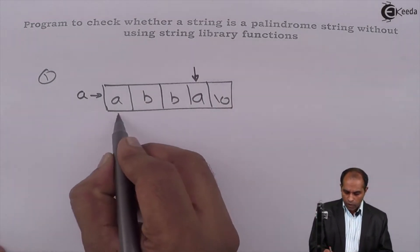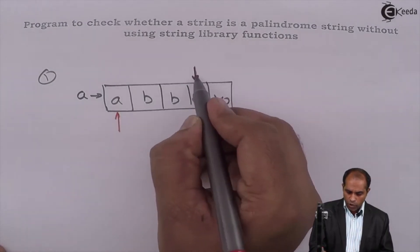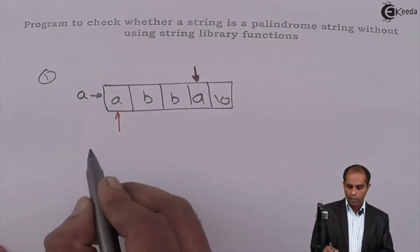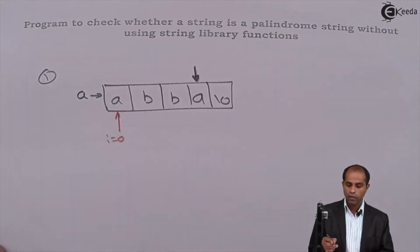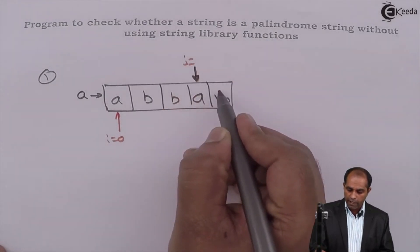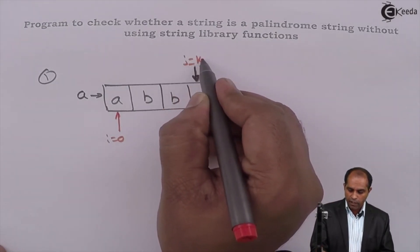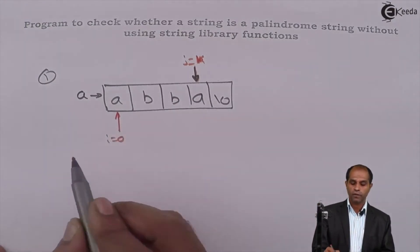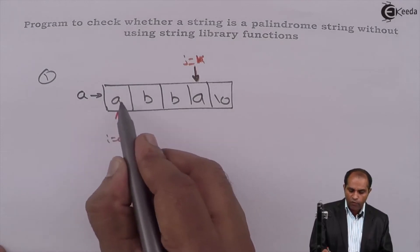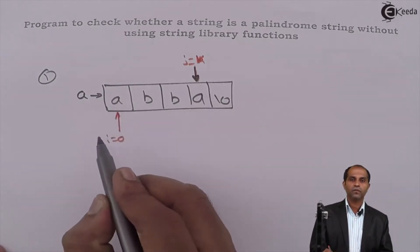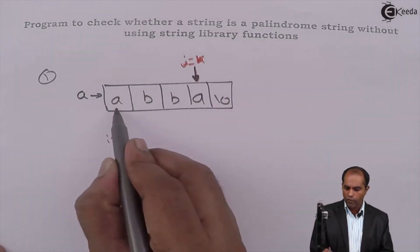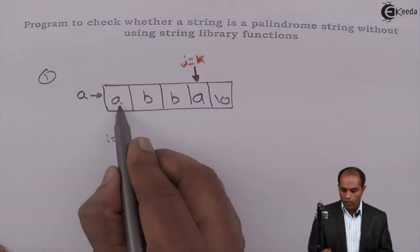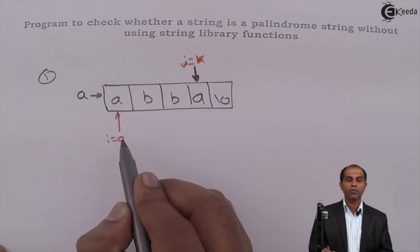So what you do is take two indices on the same array. Let's take here i as 0 and j as index minus 1, that is k. So the index of last character is k, index of first character is this one. Now compare a[i] with a[j]. Compare a[i] with a[j]. If a[i] matches with a[j], what do you do?